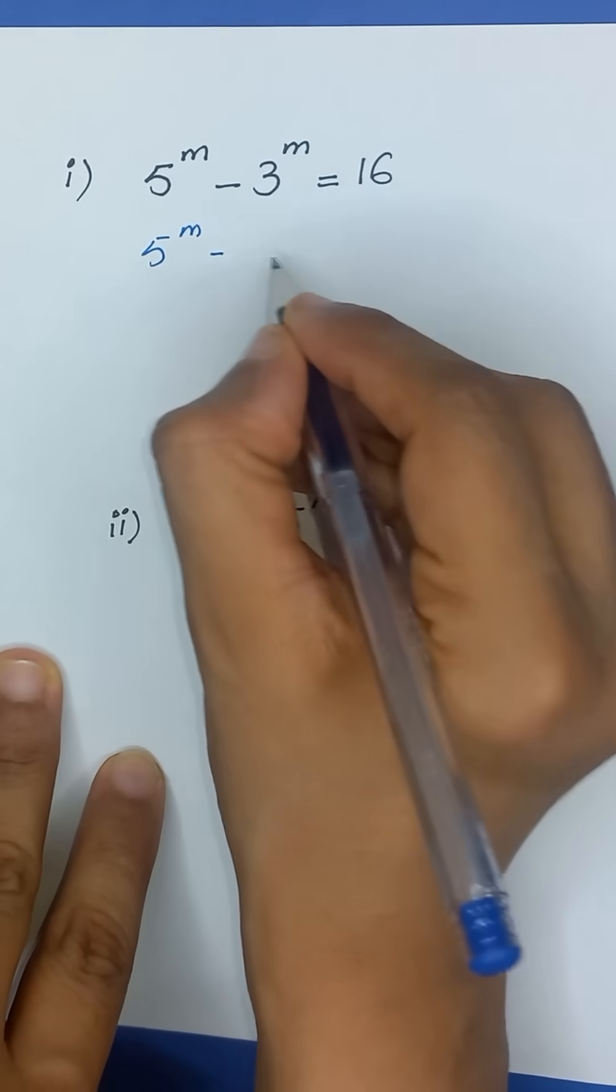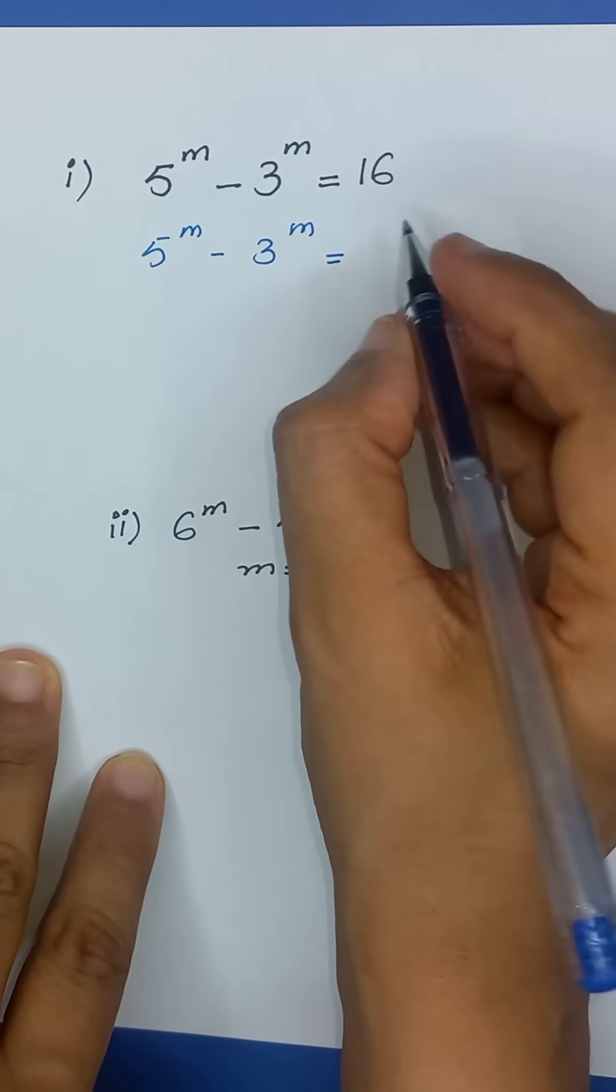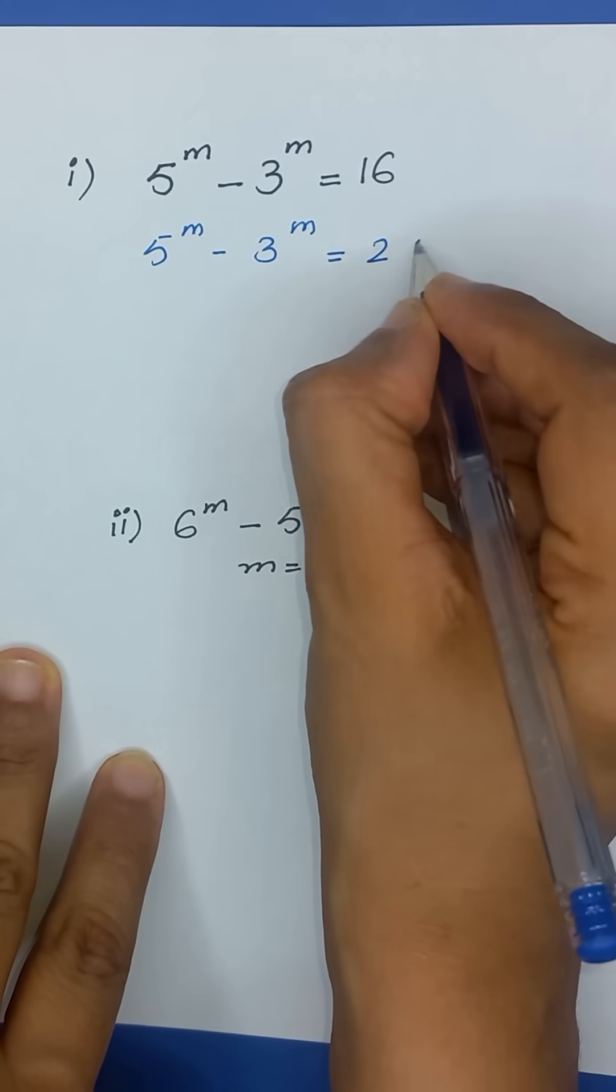So 5 to the power m minus 3 to the power m is equal to 16 can be written as 2 times 8.